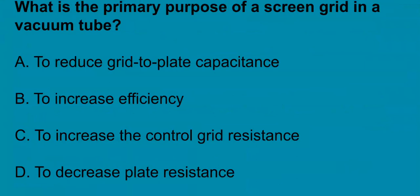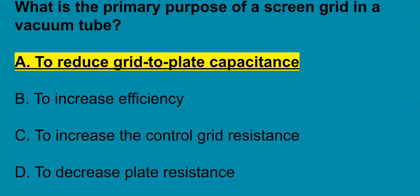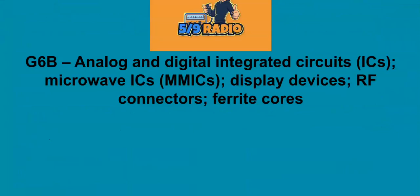G6A12, what is the primary purpose of a screen grid in a vacuum tube? That's to reduce grid to plate capacitance. G6B covers analog and digital integrated circuits, also known as ICs, microwave ICs, which is MMICs, display devices, RF connectors, and ferrite cores.